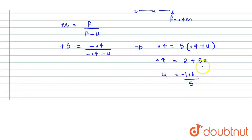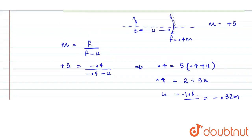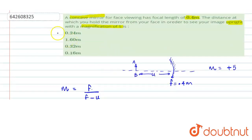On solving, we get u equals minus 0.32 meters. The negative sign indicates the object is placed in front of the mirror. I hope this helps you with the answer. Thank you.